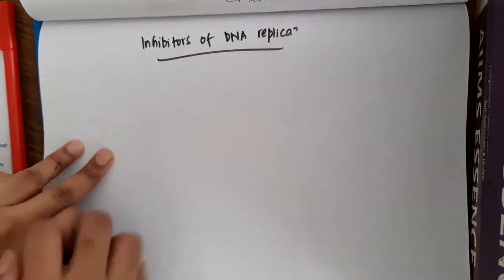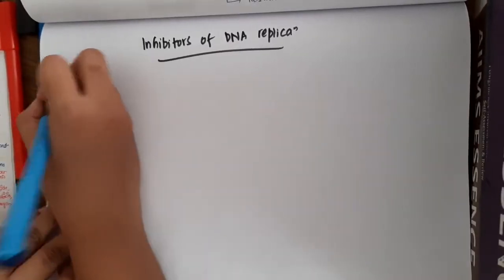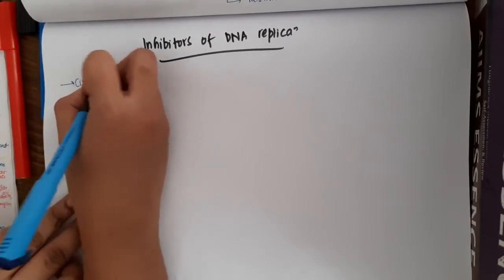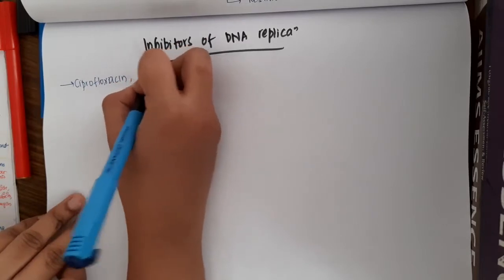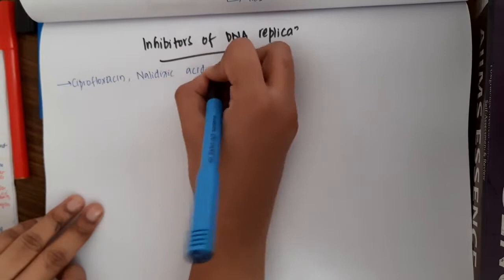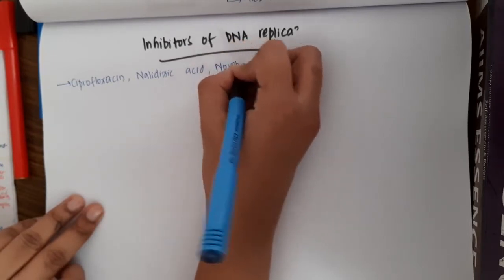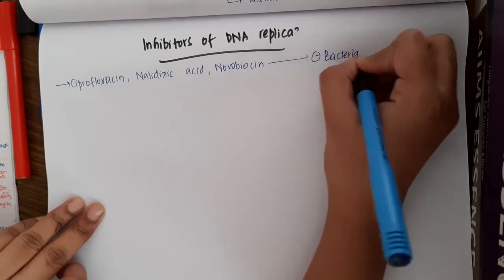If you see the antibacterial drugs like ciprofloxacin, that is fluoroquinolones like ciprofloxacin, nalidixic acid, and novobiocin, these will inhibit the enzyme bacterial DNA gyrase.